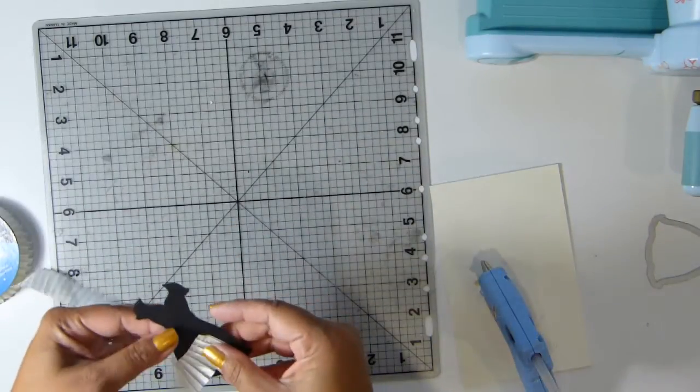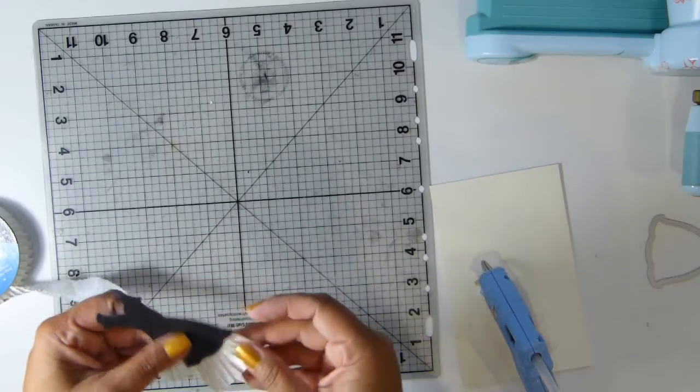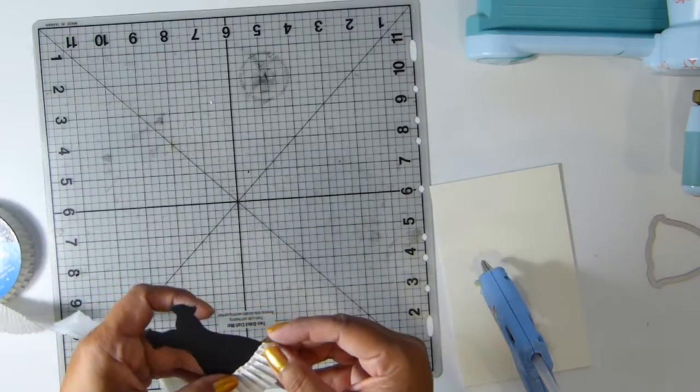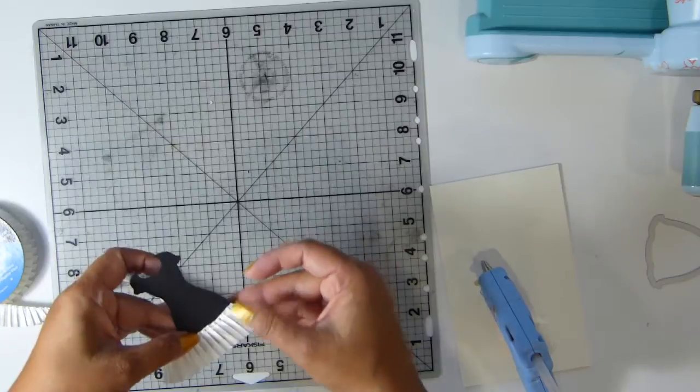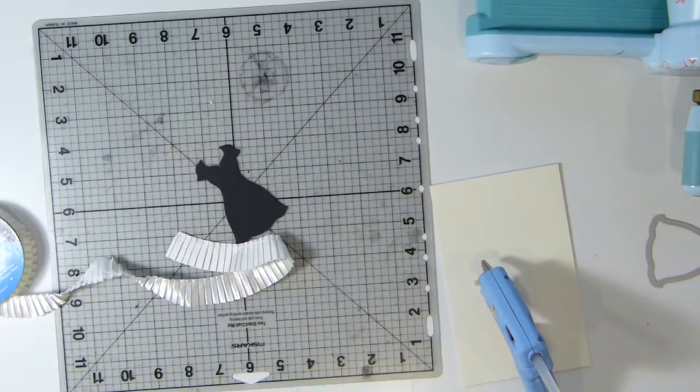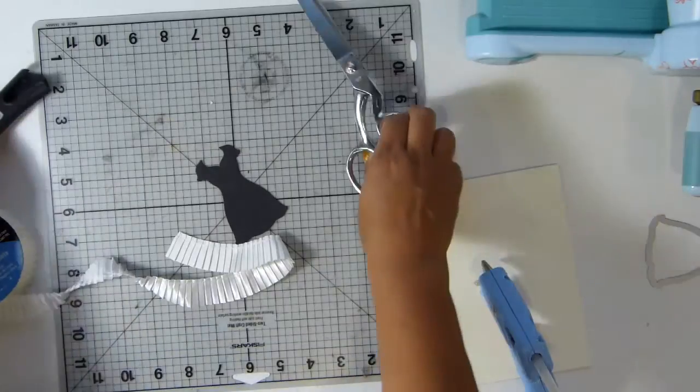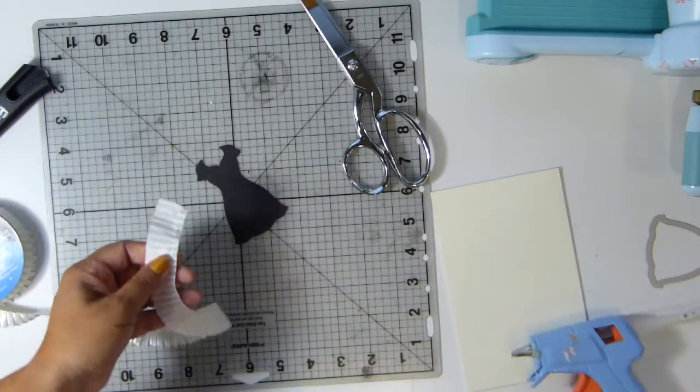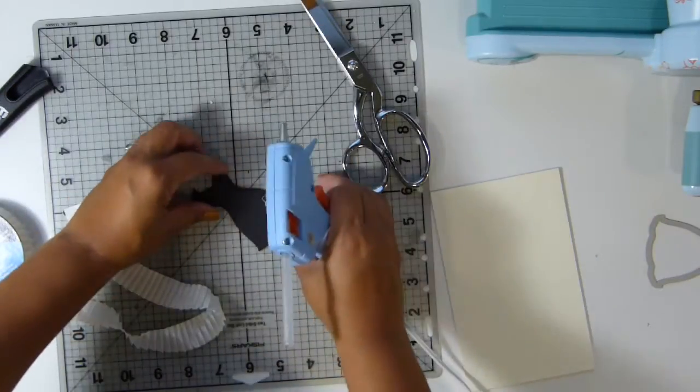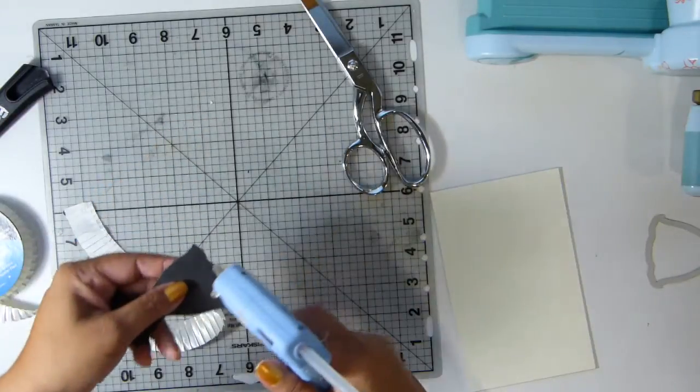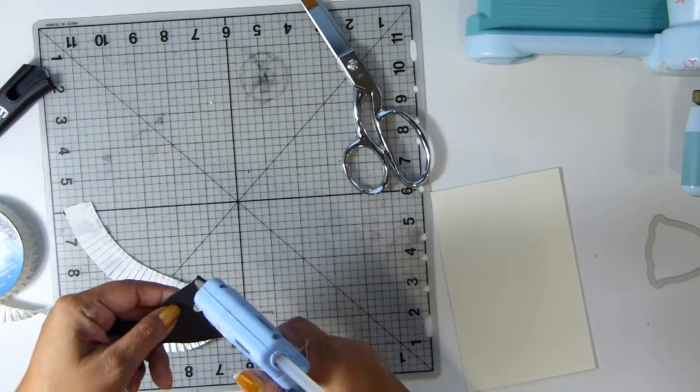I'm just going to go ahead and measure it and hot glue it to the dress. I'm going to get my ribbon scissors so I get a sharp cut, and I'm going to put hot glue on the cardstock.